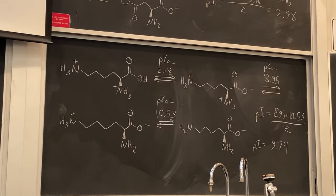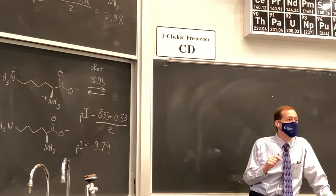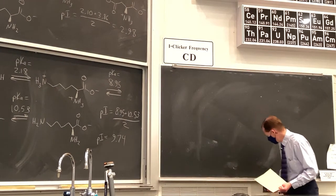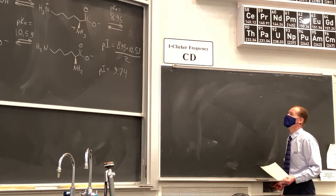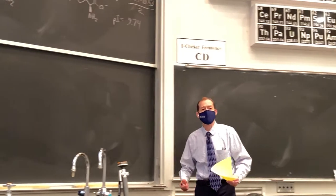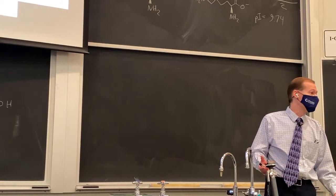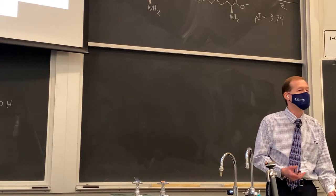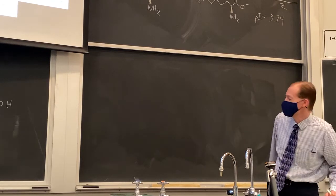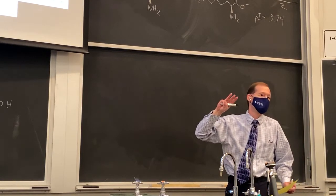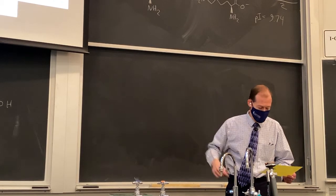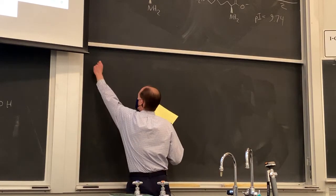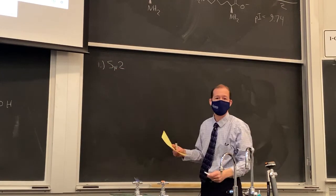The key skills for amino acid acid-base properties are: calculating isoelectric points, and determining which version of the amino acid dominates at a given pH. Now let's talk about how to synthesize amino acids. They're very important molecules, and we have many ways to synthesize them. Today we'll focus on three methods closely related to reactions we've already learned for synthesizing amines or carboxylic acids. The first is an SN2 reaction with excess ammonia.